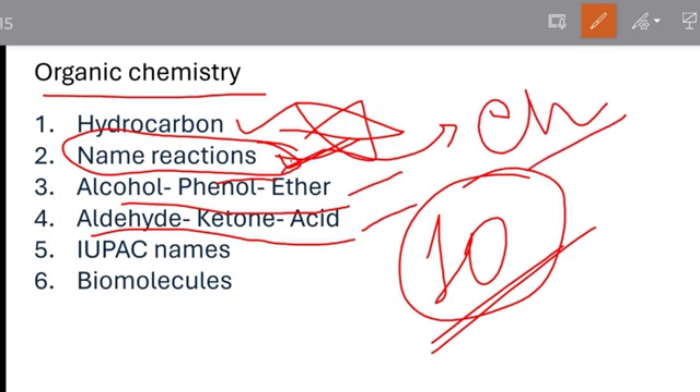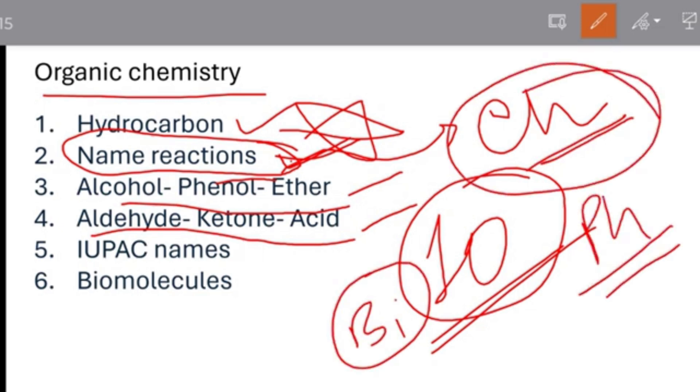See, chemistry is very scoring. You are getting afraid of chemistry, but besides biology - biology is very scoring - and between physics and chemistry, chemistry is very scoring subject. You need to study in these days. IUPAC names - you have to do this. Every year a question comes. And biomolecules.